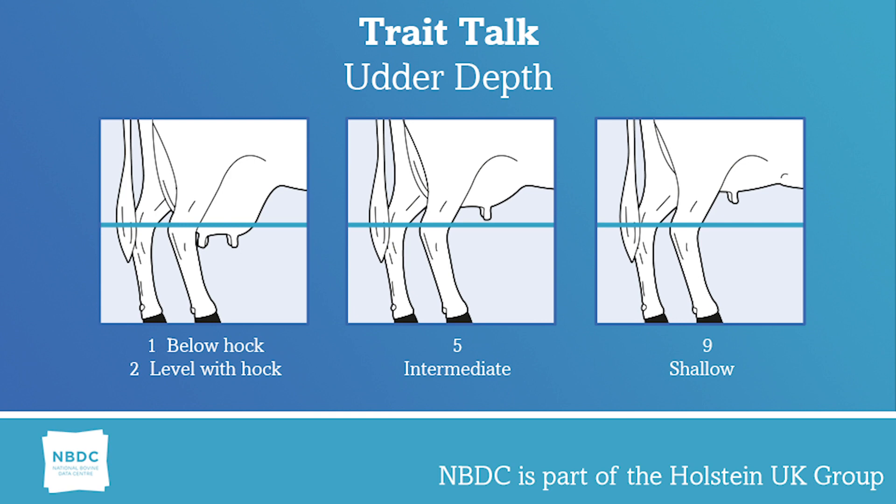Udder depth is measured at the lowest part of the udder floor in relation to the animal's hock. If the floor of the udder is level with the hock, that linear is a 2. Below the hock is a 1. The linear scale goes up 3 centimetres per point until you have a shallow udder at a 9.